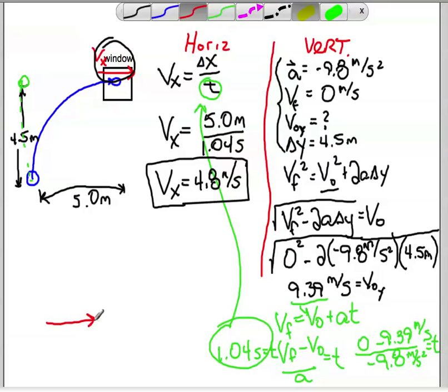We now know the x component of velocity, that's 4.8 meters per second, and I've already solved for, over here in part one, the y component of velocity, that's 9.39, and I could add those two components together to get a resultant.